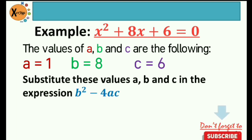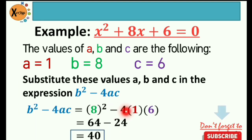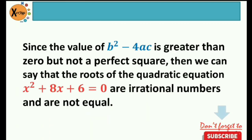Substitute those values into b squared minus 4ac. So we have 8 squared minus 4 times 1 times 6. 8 squared is 64. The product of negative 4 and 1 is negative 4, times 6 is negative 24. The difference of 64 and 24 is 40. Since the discriminant is greater than 0 but not a perfect square, the roots of x squared plus 8x plus 6 equals 0 are irrational numbers and are not equal.